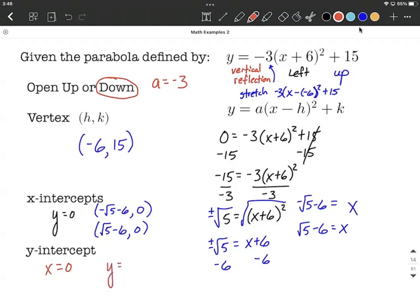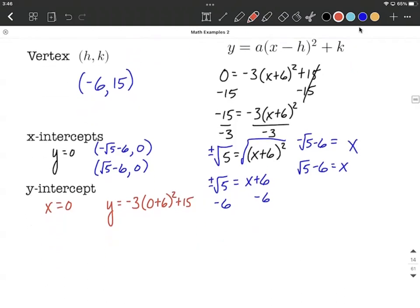So that's going to make y equals negative 3 times 0 plus 6 quantity squared plus 15. From here we have a little bit of solving down to do.